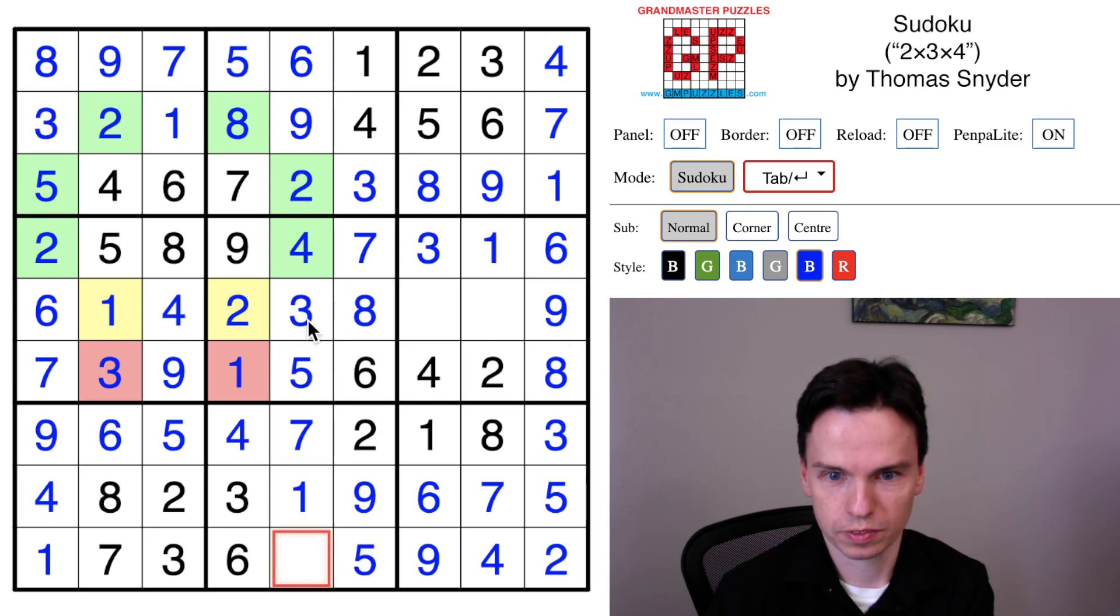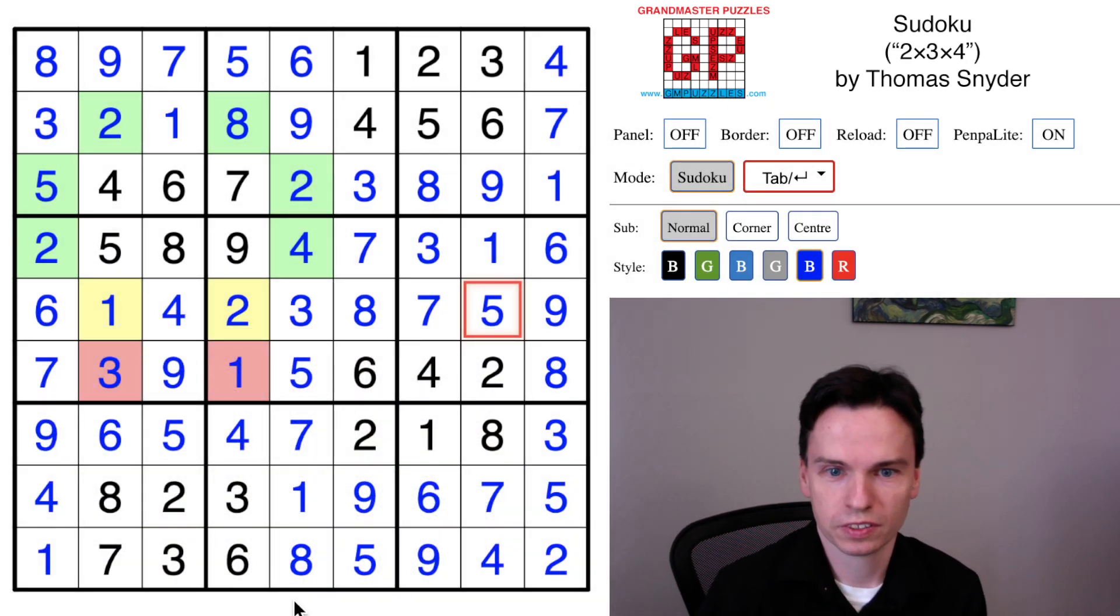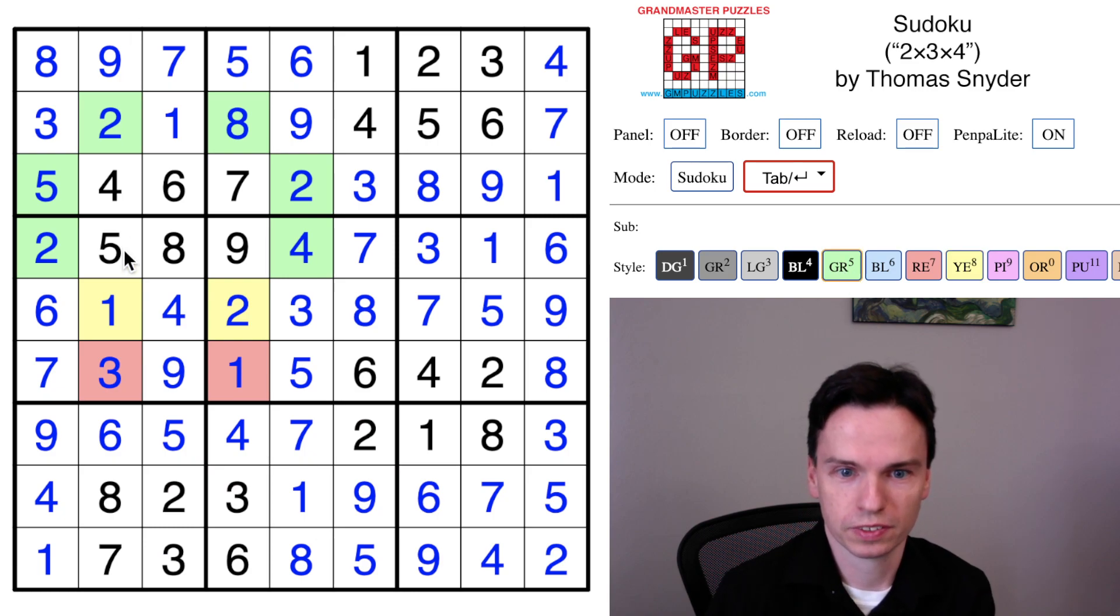Puts in eight, five. Puts in five, eight. We have a seven and a five. And we finish the puzzle. So tricky classic with a less common deduction in the middle. But as I was trying to show,